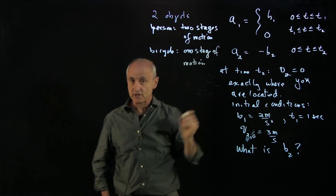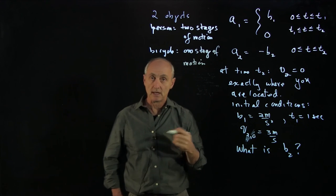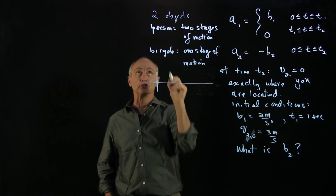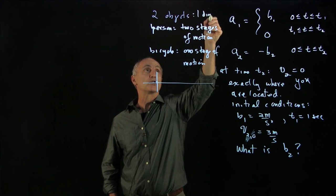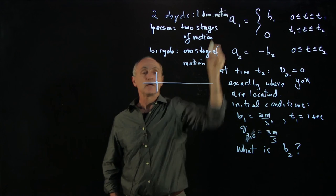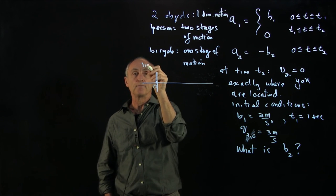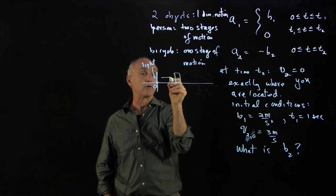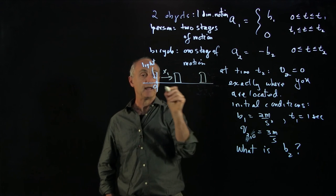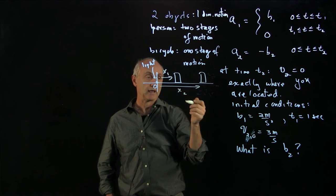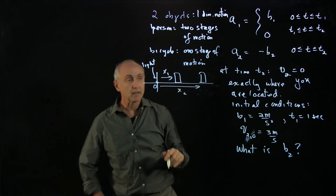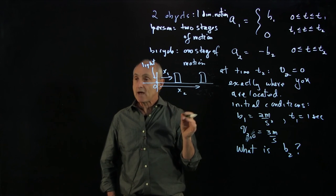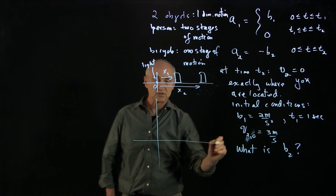To get started, it always helps to choose a coordinate system and to make some sketches of the problem. It's all one-dimensional motion with two objects. We'll pick an origin at the light, at one side of the intersection. We have two objects, which we'll denote as x1 for you and x2 for the bicyclist. The bicyclist will be in front of you initially.